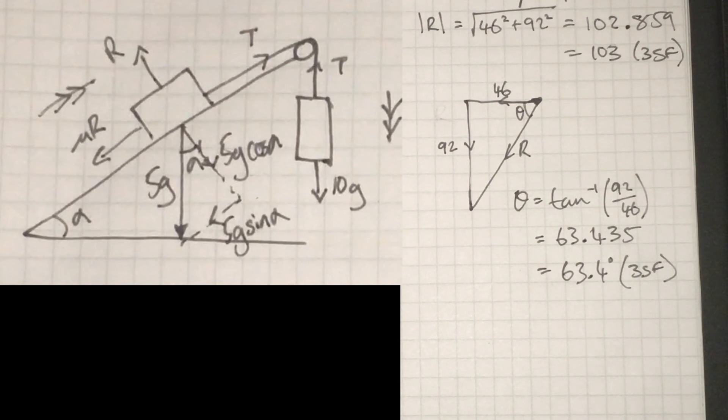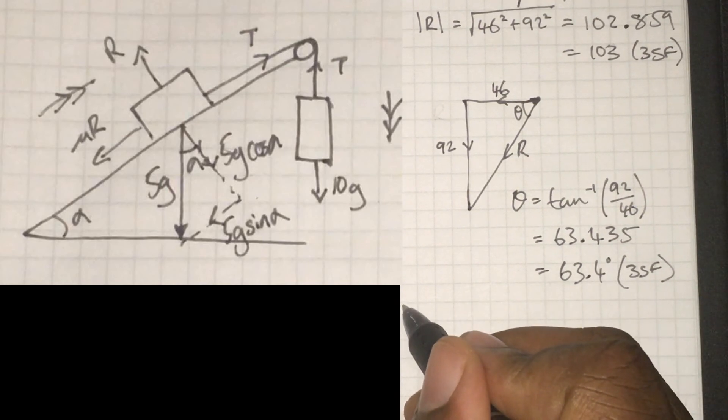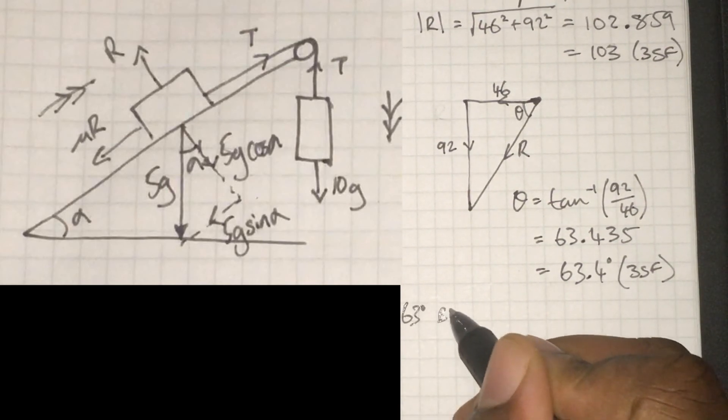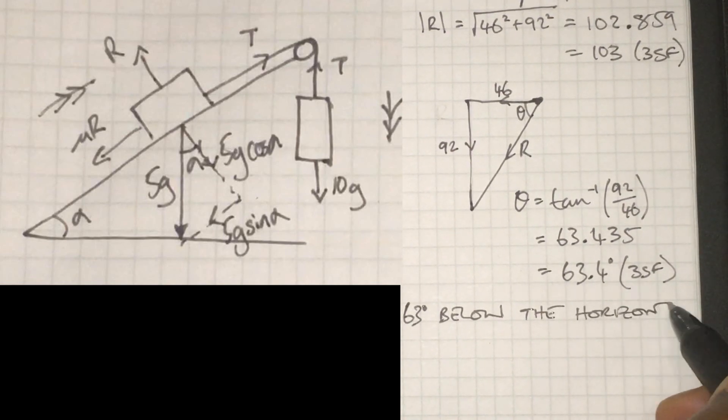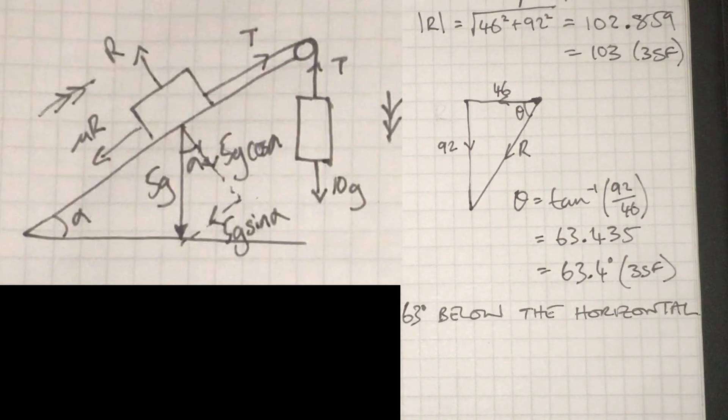So I can give it as a bearing or I can just give some more detail to what the 63.4 degrees represents. So the forces on a pulley, a couple more diagrams are needed to really be clear about the direction and the magnitude of the forces that act on the pulley.